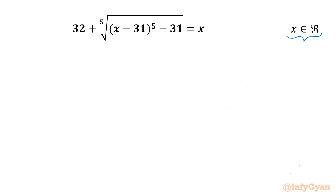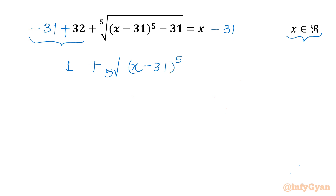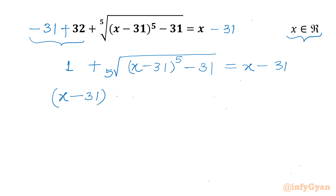Let's get started by taking 31 away from both sides. So I will write 32 minus 31, which is 1, plus the 5th root of (x minus 31) whole power 5, minus 31. And the right-hand side will be x minus 31.